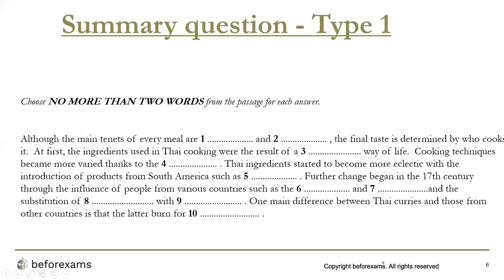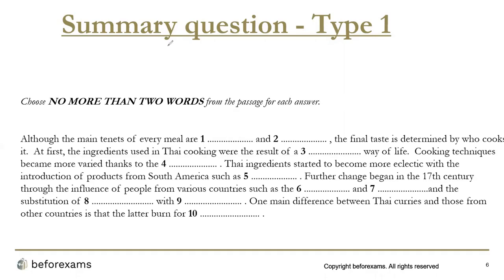Now let's look at an example. For the first question type where no list is given, you need to figure out the answer yourself. For example, the summary says: 'Although the main tenets of every meal are dash and dash.' You can predict that the gaps likely refer to nutrients. You then look for those keywords in the passage, making it easy to find the answers.